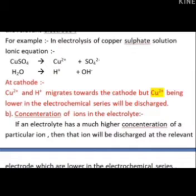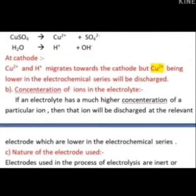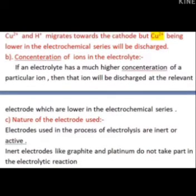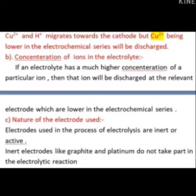The second factor is concentration of ions in the electrolyte. Sometimes, if sodium ions and hydrogen ions are both present, and sodium is above hydrogen in the series — meaning hydrogen should discharge first — but if the concentration of sodium ions is much higher, sodium may discharge instead. So whichever ion has a higher concentration will more easily discharge at the cathode.